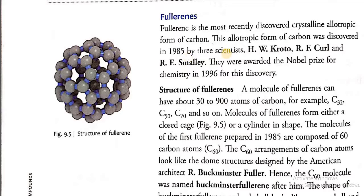This allotropic form of carbon was discovered in 1985 by three scientists: H.W. Kroto, R.F. Curl, and R.E. Smalley. They were awarded the Nobel Prize for Chemistry in 1996 for this discovery.